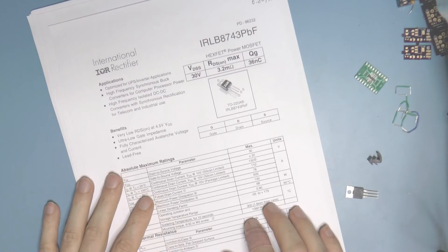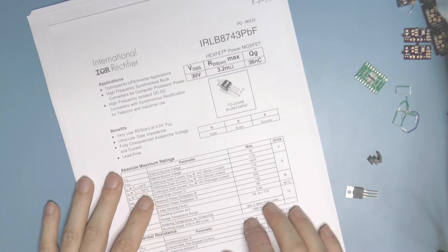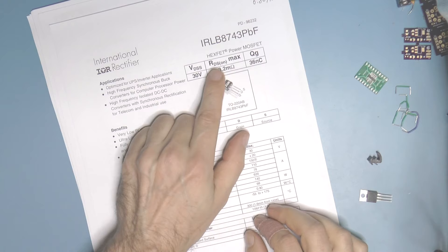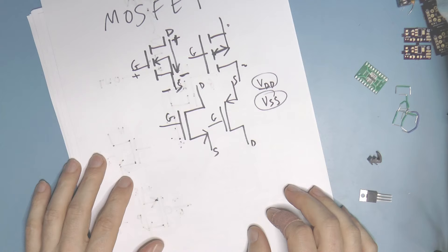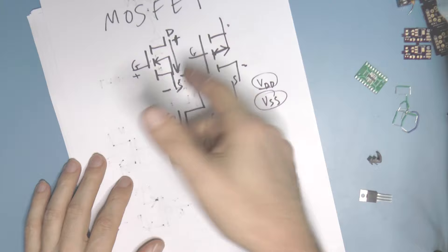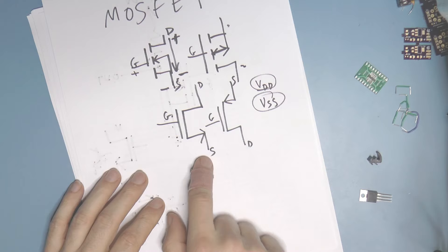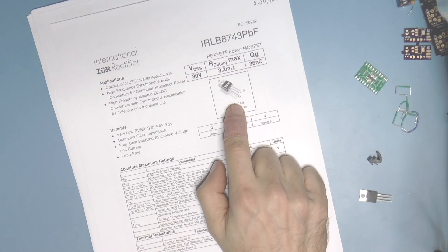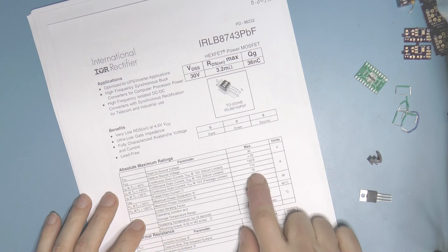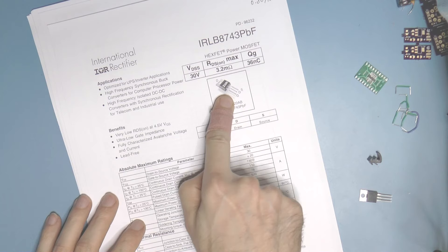Here's another nice parameter: RDS on — static drain to source on resistance. On the front page they have in huge bold letters RDS on max 3.2 milliohms. This is actually a marketing thing. You can measure it different ways — maybe connect the gate to the drain, or have the gate 10 volts above the source. Typically 2.5 milliohms where VGS is 10 volts and you're sending 40 amps through it. This is a power MOSFET, so you want extremely low resistance when you turn the transistor on.